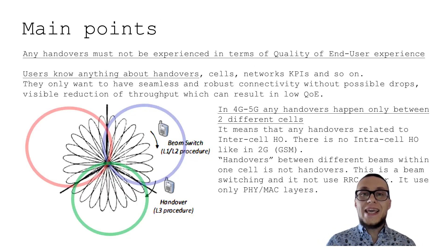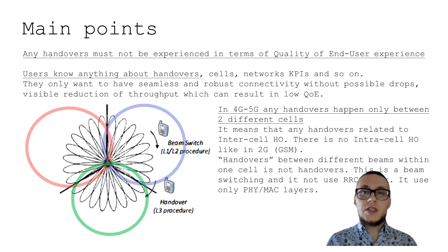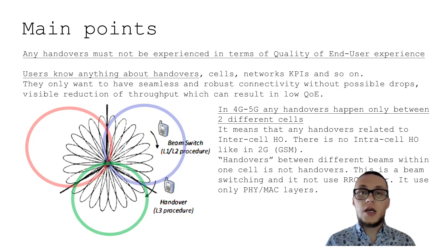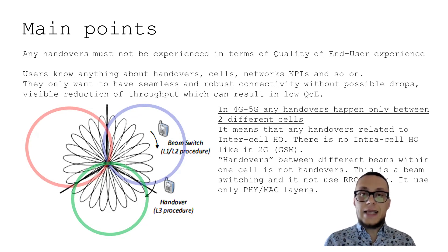First, let's review the main points of any handover. Any handover must not be experienced in terms of quality for end users. For end users, there is no difference how handovers are worked out, what kind of KPIs or network cells are involved — they don't care. They only care about getting very good, reliable connectivity and service without any possible drops, without any visible or sensible reduction of throughput and latency.